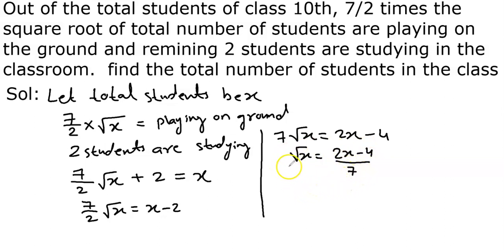Now, root nikalenge. Yahan se root nikalenge, to yaha square aajayega. To x is equal to two x minus four whole square, seven ko bhi square melega. Yes. To x is equal to, ab yahan pe hum whole square ki formula lagayenghe. To ye ho jayega: four x square minus two into two into four, sixteen x, plus four ka square sixteen, upon seven ka square forty nine.